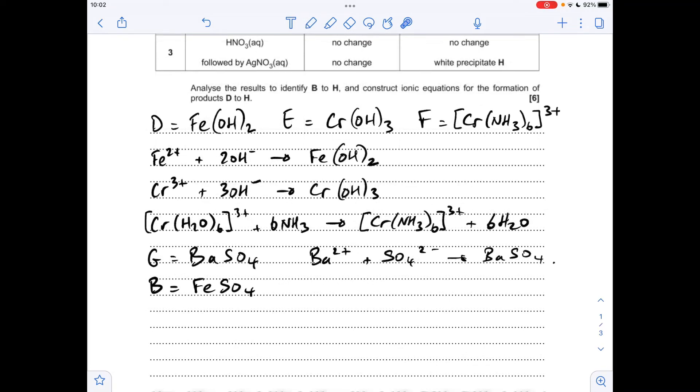Moving on to test three, again they're starting off with nitric acid just to check there's no carbonate ions present, which there aren't. They're following it up by adding silver nitrate solution, testing for halide ion. No change for substance B but we're getting a white precipitate H with substance C.